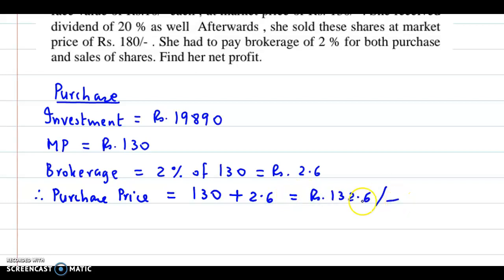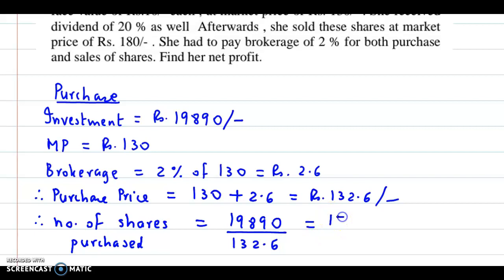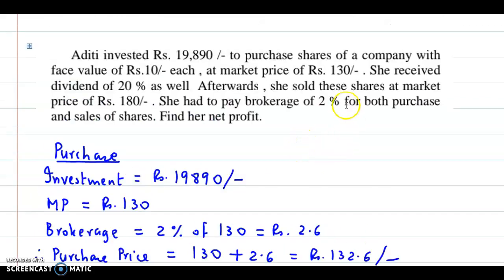Now we have the investment and the purchase price of each share, so we can calculate the number of shares purchased. Number of shares = investment divided by purchase price = 19,890 divided by 132.6, which gives us 150. So the number of shares purchased is 150.